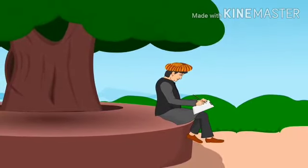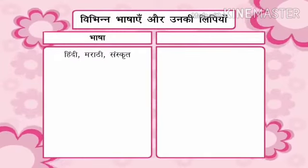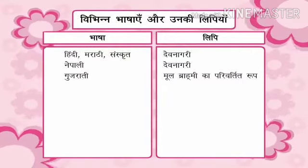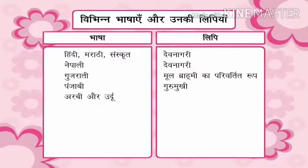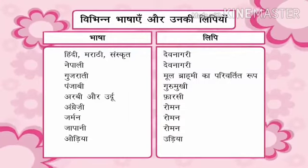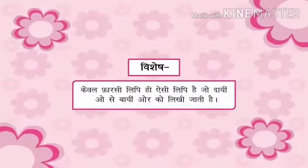Hindi ki lipi Devnagri hai, jo Prabhi lipi se vikasit hui hai. Vibhinn bhashaen aur unki lipiyaan: Hindi, Marathi, Sanskrit — Devnagri; Nepali — Devnagri; Gujarati — Mool Prabhi ka parivartit roop; Punjabi — Gurmukhi; Arabi aur Urdu — Farsi; Angrezi, German, Japani — Roman; Odia — Odia; Bangla — Bangali. Vishesh: Kewal Farsi lipi hi aisi lipi hai jo dahine ore se baaen ore ko likhi jaati hai.